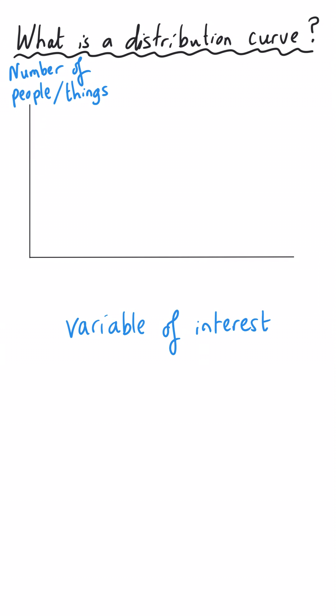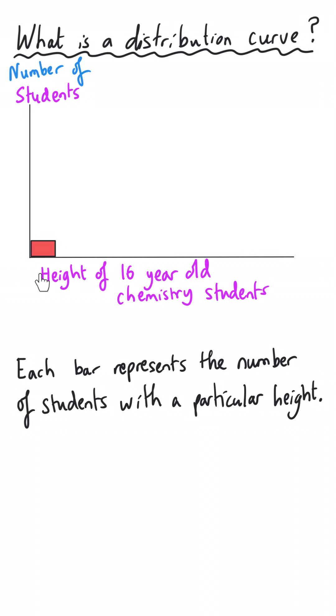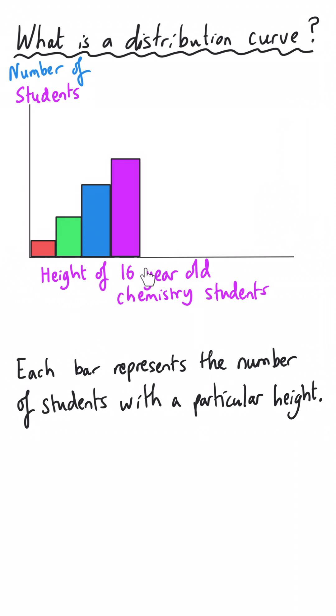That's very vague, so let's consider a typical classroom of 16-year-olds. There are going to be, say, 30 people in that class, and they will all have a different height. Some of them will be short, and a few more of them will be a bit taller, and then a bit taller, and then a bit taller. You can already see that what we've got is a bar chart where we're plotting the heights of these people, with the number of people on the y-axis.